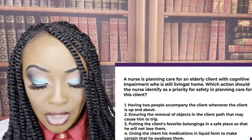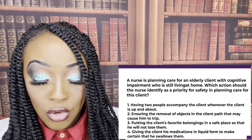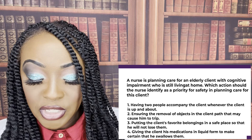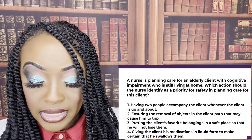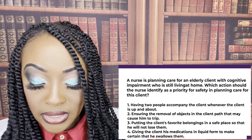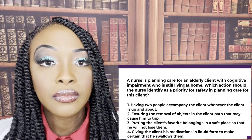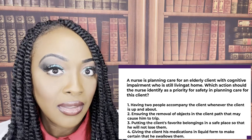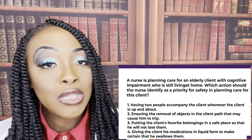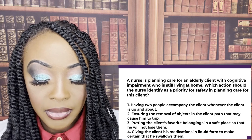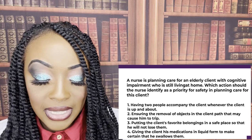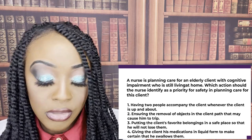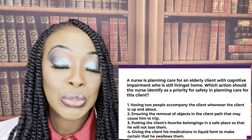Last question. A nurse is planning care for an elderly client with cognitive impairment living at home. Which action should the nurse identify as the priority for safety? One, having two people accompany the client whenever he's up and about; two, ensuring removal of objects in the client's path that may cause him to trip; three, putting the client's favorite belongings in a safe place so he won't lose them; four, giving medications in liquid form to ensure he swallows them. The correct answer is two — removing fall hazards addresses safety directly. Having two people is unrealistic. Protecting belongings has nothing to do with safety. Liquid medications address compliance, not safety.